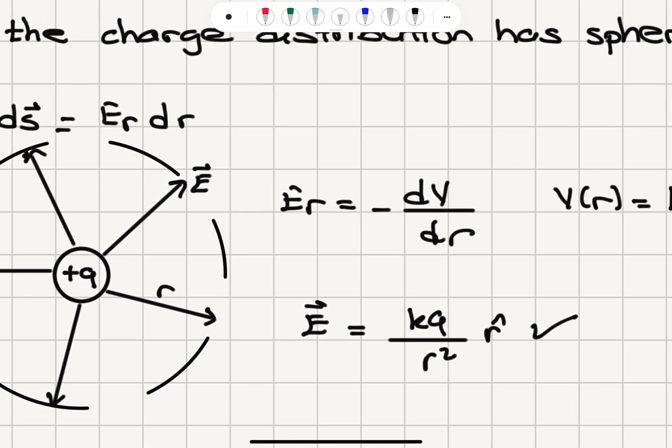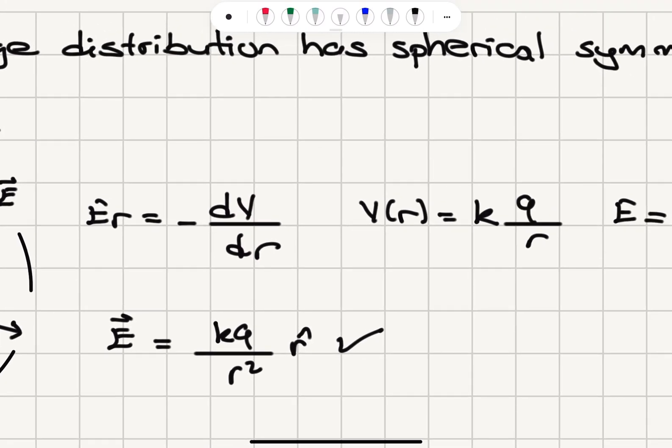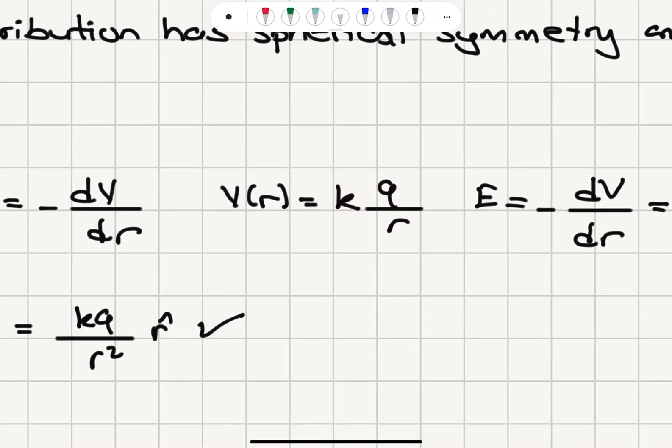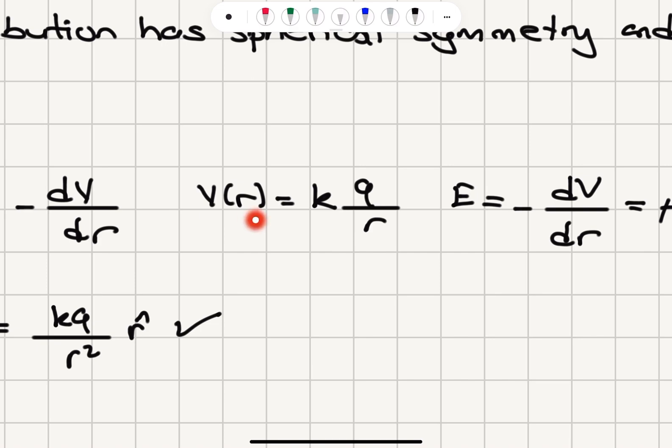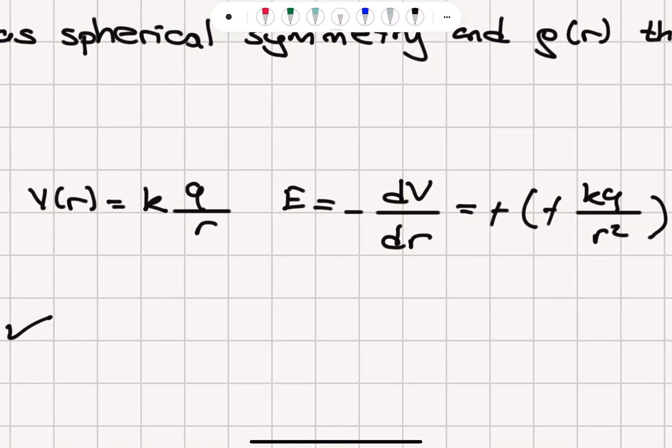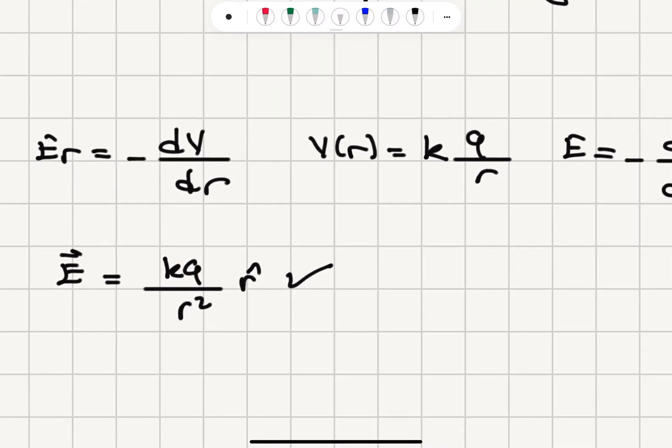We know that the potential due to a point charge is kq over r, assuming that the potential at infinity is zero. Then if I calculate the electric field using minus dV dr, I will have the derivative of 1 over r is minus 1 over r square. So minus signs will cancel. This will become kq over r square.